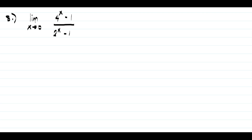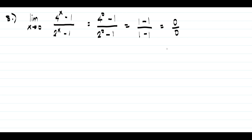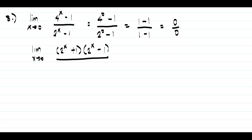In example number eight, we have the limit of 4 raised to x minus 1 all over 2 raised to x minus 1 as x approaches 0. Direct substitution gives 0 over 0, which is indeterminate. To resolve this, we factor the numerator: 4 raised to x minus 1 can be written as a difference of two squares, that is 2 raised to x plus 1 times the quantity 2 raised to x minus 1, all over 2 raised to x minus 1.